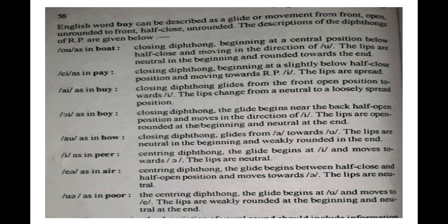I was going through my books which I studied, and this information is very good — I hope it will help you. The English word 'by' can be described as a glide or movement from front open unrounded to front half close unrounded. The diphthong /əʊ/ as in 'both': closing diphthong, beginning at the central position below half close and moving in the direction of /ʊ/. The lips are neutral in the beginning and rounded towards the end.